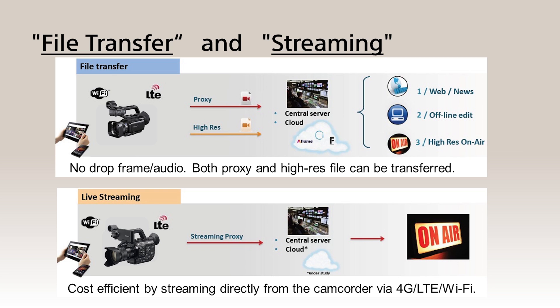Having the network connection, there are two major functions you can use with our camcorders: file transfer and live streaming. Both the PXW-X70 and PXW-FS5 can record full resolution files and proxy files at the same time, and you can send these clips from the field to an FTP server or cloud service. Live streaming can provide real-time images with low latency, but may have frame drop or digital noise depending on the network bandwidth. Therefore, file transfer and live streaming produce different results for different applications.